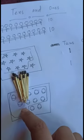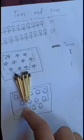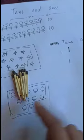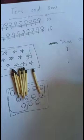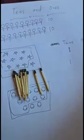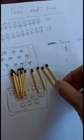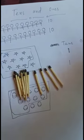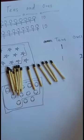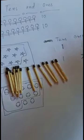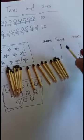Ab yeh ten ho gaye. Ab hai hume twenty tak count karna hai. Ten plus one is equal to eleven, plus one is equal to twelve, 13, 14, 15, 16, 17, 18, 19, 20.